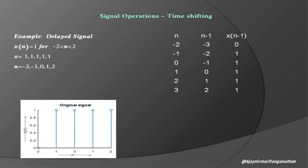We have a delayed signal example where x[n] equals 1 for n in the range minus 2 to 2, giving us an array of five ones. In the table, the first column is n, the second column is n minus 1, and the third column is x[n-1]. In the first column we write n values: minus 2, minus 1, 0, 1, 2, and 3. In the second column we write n minus 1, so minus 2 minus 1 gives minus 3, and so on. The x[n] values are known between minus 2 to 2, so they are written directly in the x[n-1] column, and unknown values like minus 3 are set to 0.